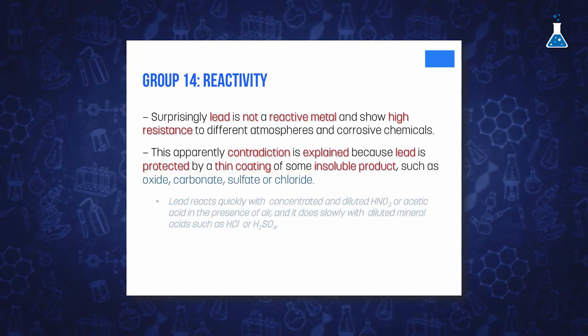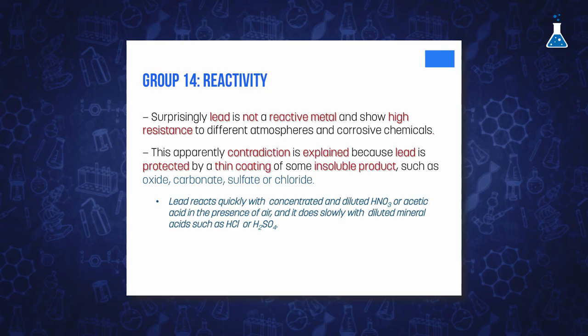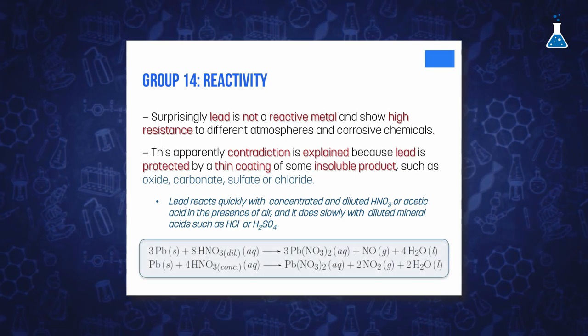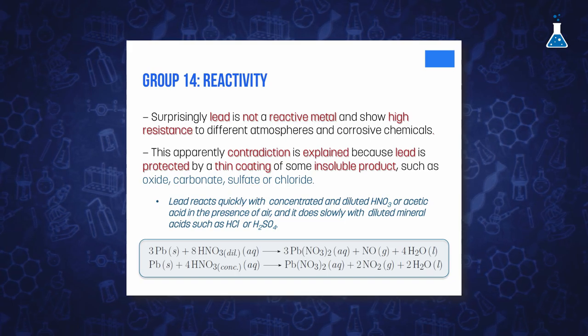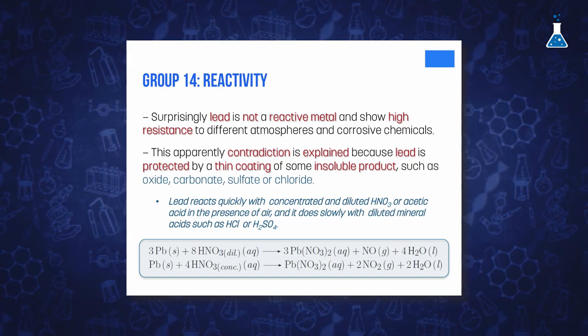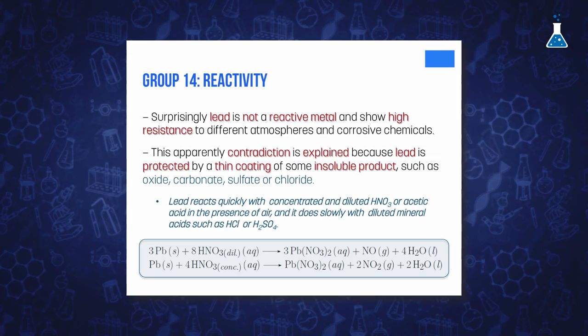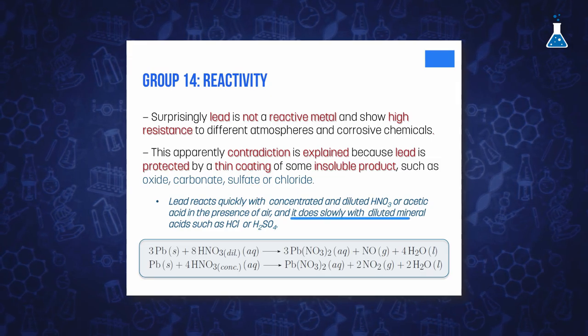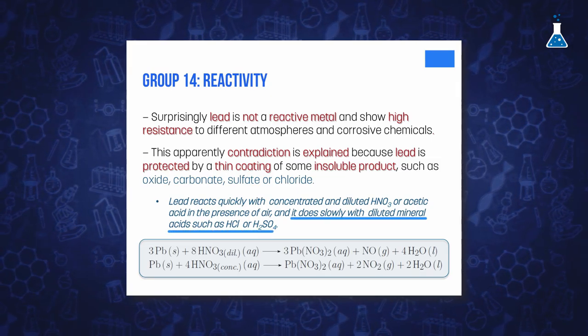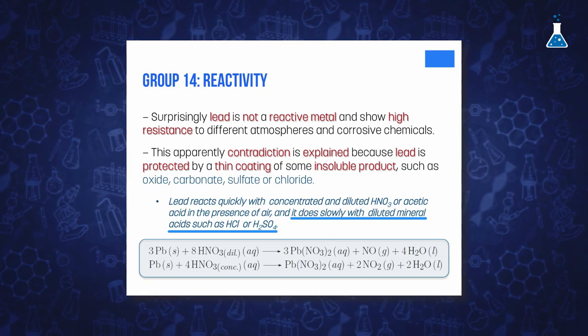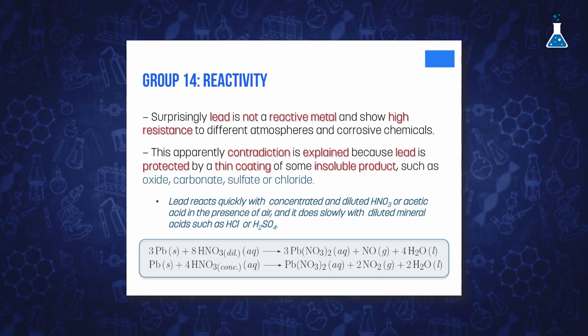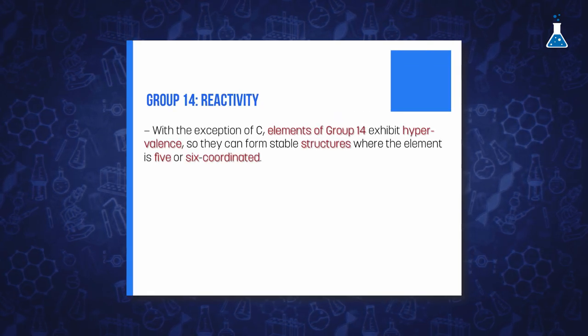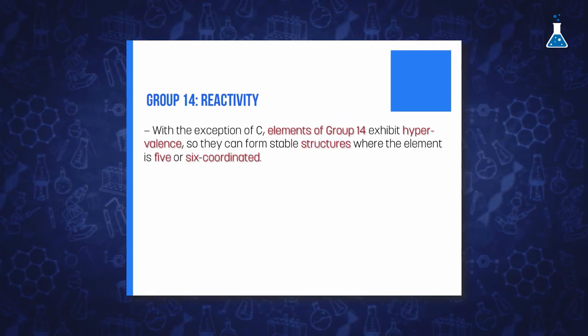So while lead reacts quickly with nitric acid to form the corresponding salt, lead 2 nitrate, liberating oxides of nitrogen, or with organic acids such as acetic acid in the presence of air, it only does slowly with hydrochloric acid or sulfuric acid by forming insoluble lead chloride or lead sulfate on the surface of the metal.